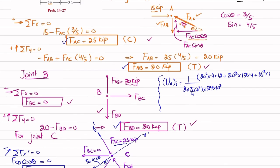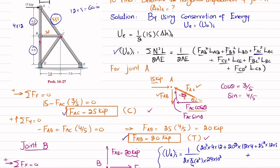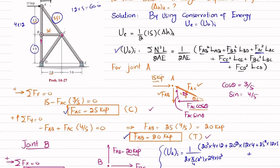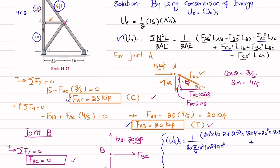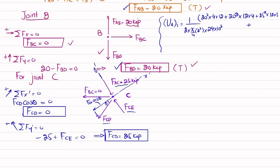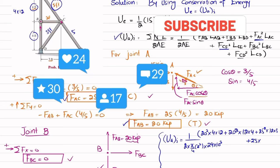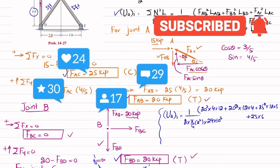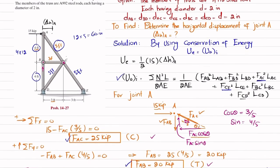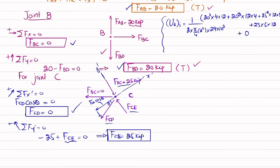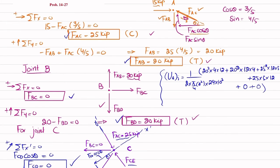Continuing: F_CE = 25 kips with length 5 ft (60 inches, by Pythagorean theorem). F_BC = 0, so that whole term is zero. F_CD = 0, so that term is also zero. Solving the expression gives strain energy due to axial loading equal to 0.6224 kip·inch.